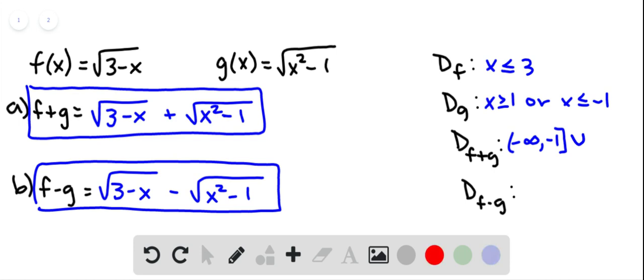But then if we combine these two ideas here, less than or equal to 3 and greater than or equal to 1, we get the interval from 1 to 3. Square brackets to include the end points.